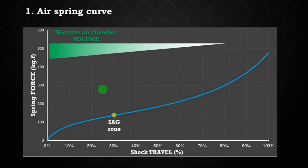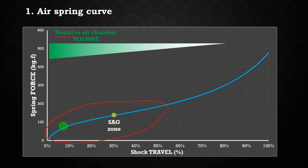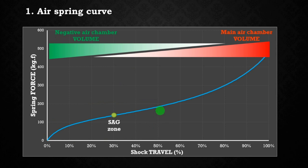The negative air chamber of your shock contributes mostly to the first half of the air spring curve. By changing the volume of the negative air chamber you can change the initial shape of the curve. As most of you probably already know, by changing the main air chamber volume you affect the last part of the air spring curve.